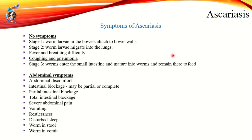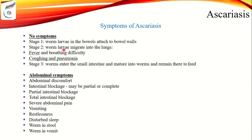The disease is known as Ascariasis. Initially, Ascariasis may not show any symptoms, but with more infection symptoms appear. When the worm migrates to the lungs, symptoms include fever, difficulty in breathing, coughing, and pneumonia.